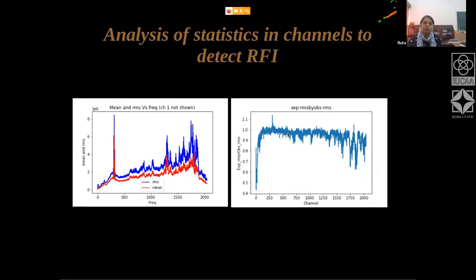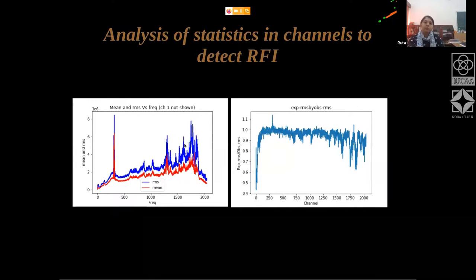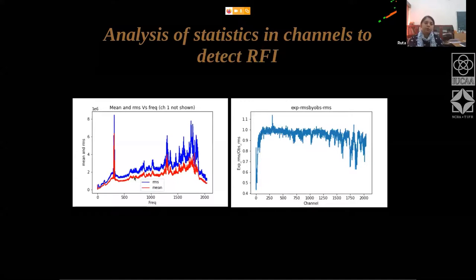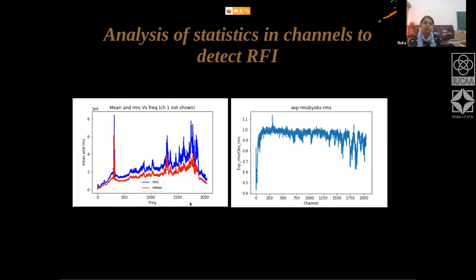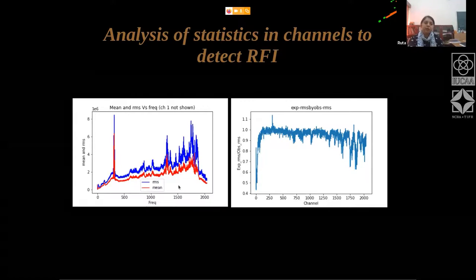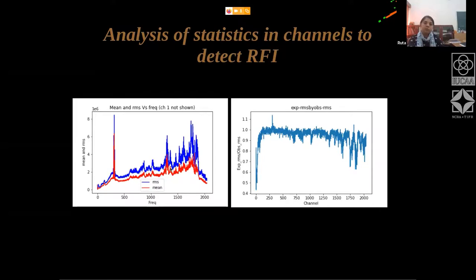You can find different methods to categorize RFI. Here I have plotted the mean and RMS on the y-axis with frequency channels on the x-axis, and you can see that if you take the mean and RMS, the behavior is slightly different. You can use the ratio to explore the properties.